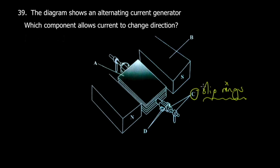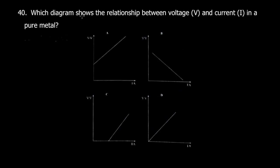Let's move to question 40. Which diagram shows the relationship between voltage and current in a pure metal? All those except this one follow Ohm's law. As voltage increases, current increases proportionately. The difference is one of them is a pure metal. What do we expect of a pure metal? We expect it to have zero resistance.